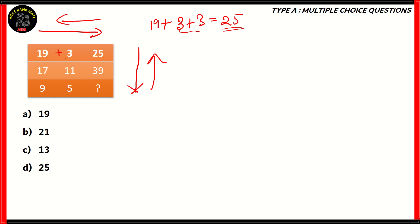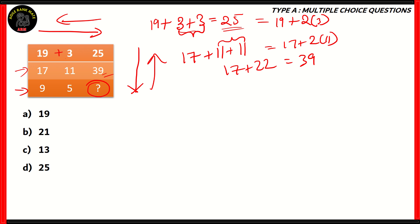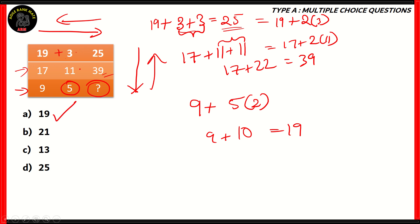So the pattern is: the first number plus two times the second number equals the third number. For the first row it was 19 plus 2×3 equals 25, and for the second row 17 plus 2×11 equals 39. Following the same pattern for the third row: the first number is 9, the second is 5, so we calculate 9 plus 2×5, which is 9 plus 10, giving 19. So option A, 19, is the correct answer for this question.